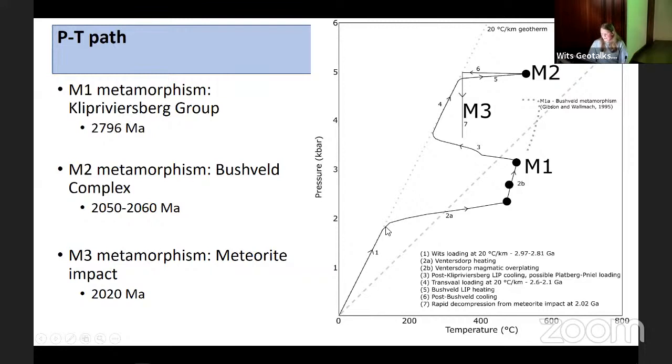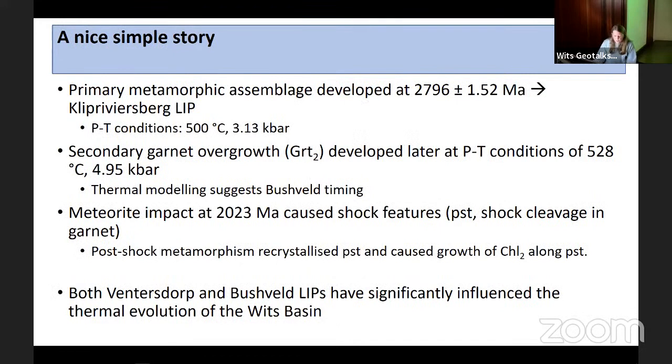What about the Bushveld? There are multiple Bushveld age intrusions in the region. With no addition of mafic material we don't reach needed temperatures but we approximately reach our pressures. If we have the rest of the Ventersdorp and Transvaal supergroup plus Bushveld, we get enough pressure. If we intrude sills stratigraphically above the sample we reach our temperature. These garnet two overgrowths may well be related to the Bushveld. We don't have strong chronological data, but through PT and sill emplacement modeling there's high potential for Bushveld overprint.